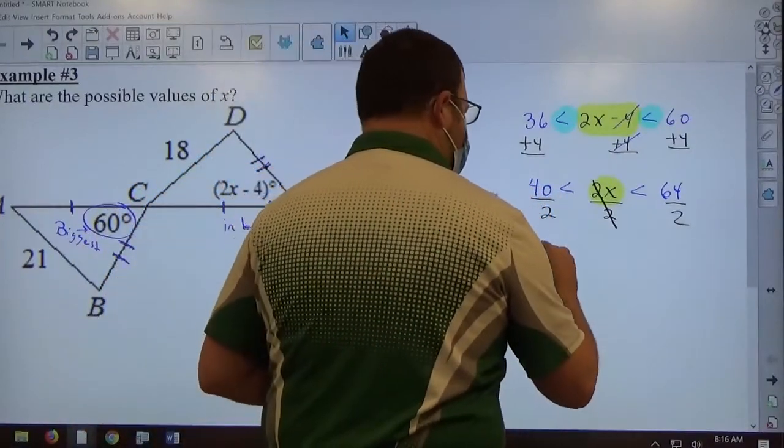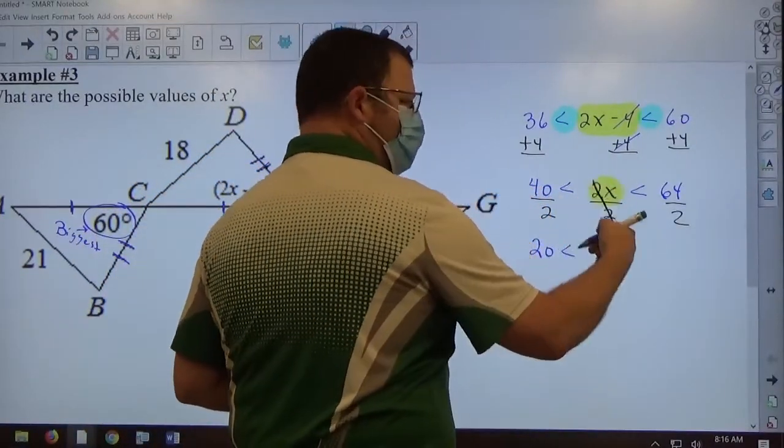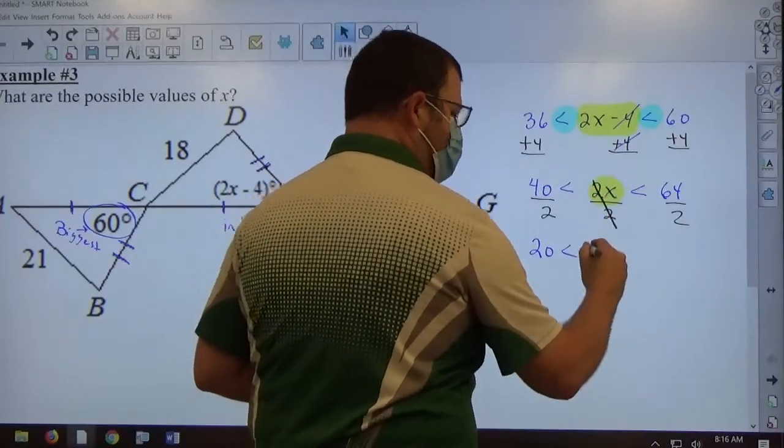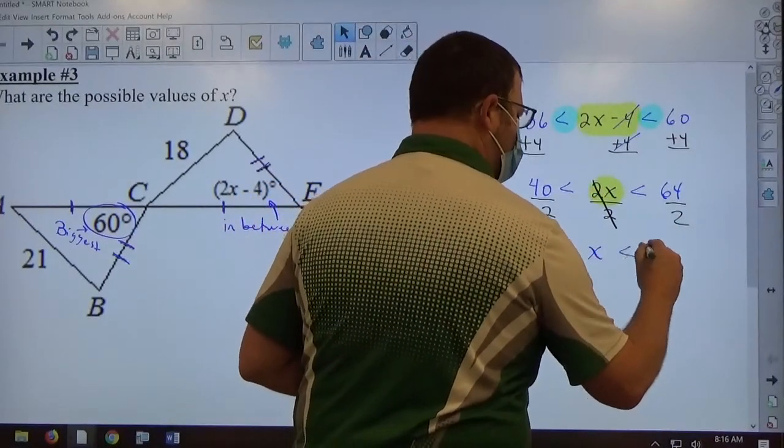And 40 divided by 2 is 20. The 2s divide out to 1, so we get 1x, better known as x. 64 divided by 2 is 32.